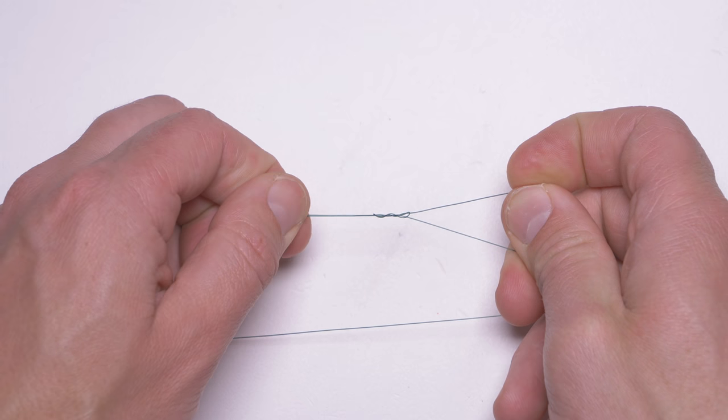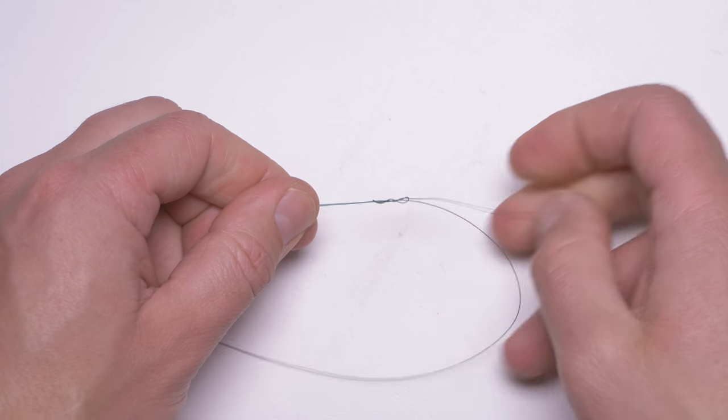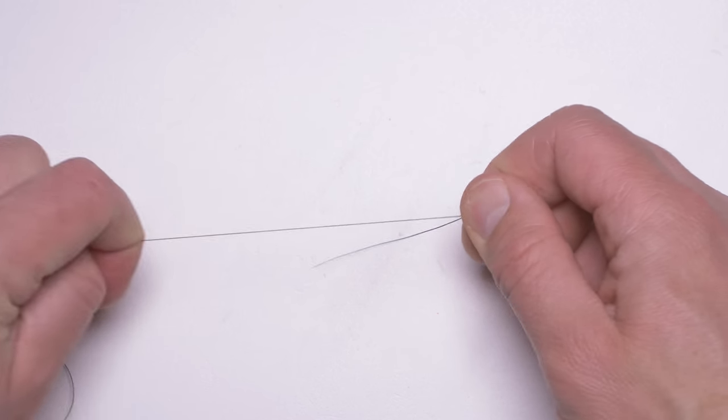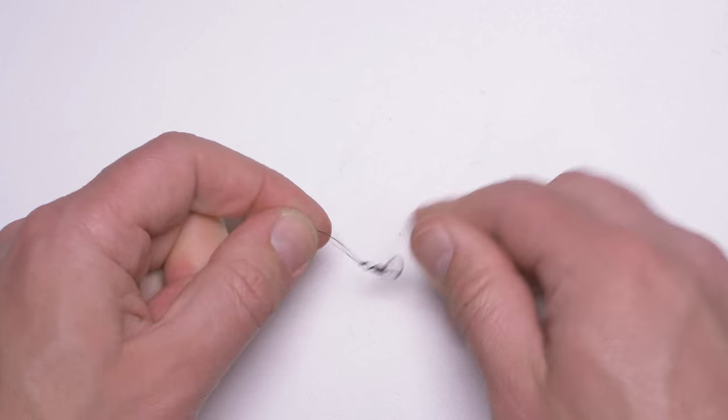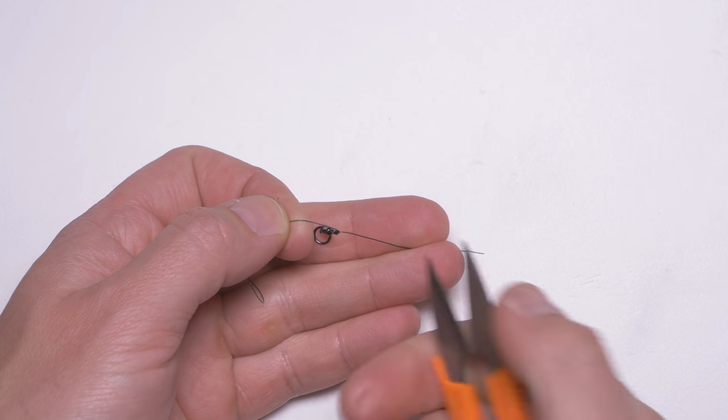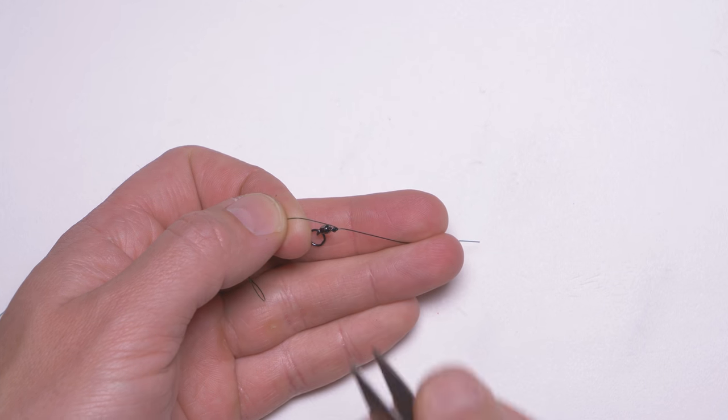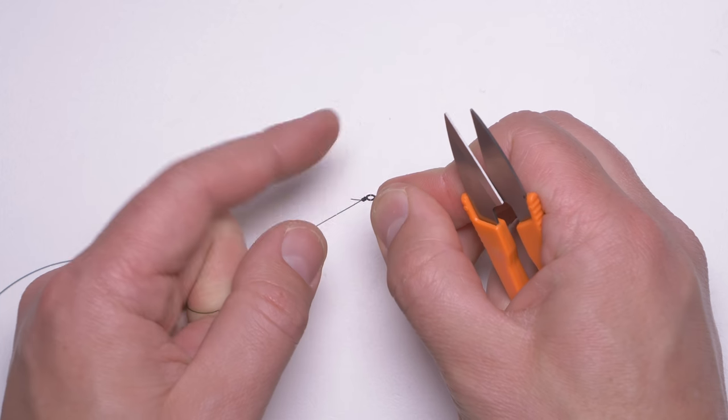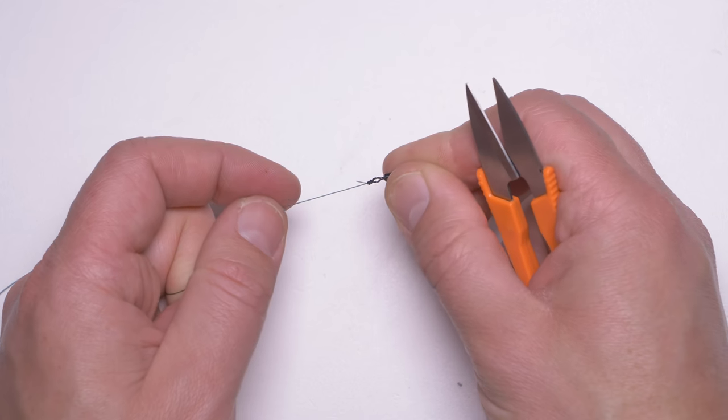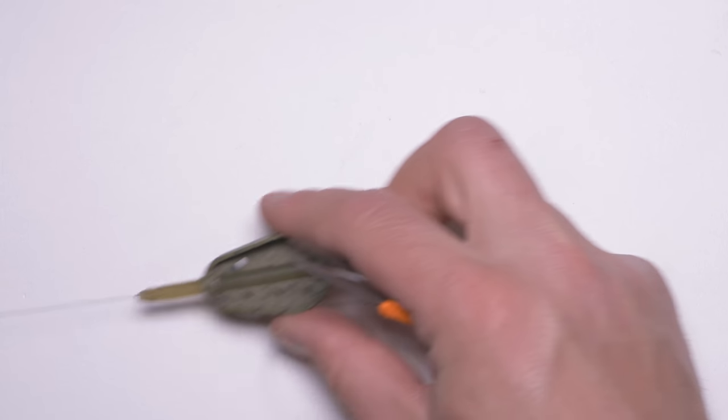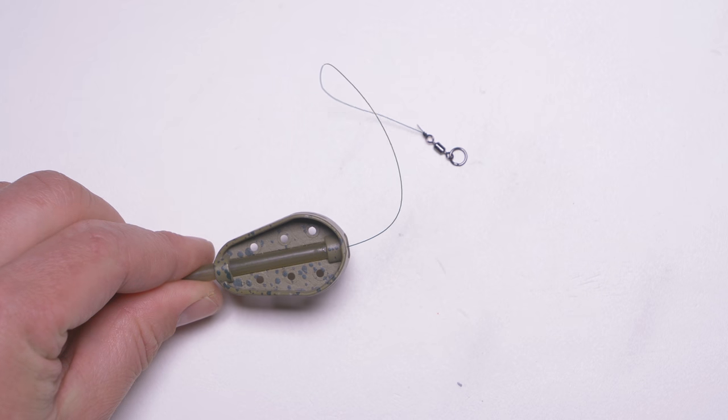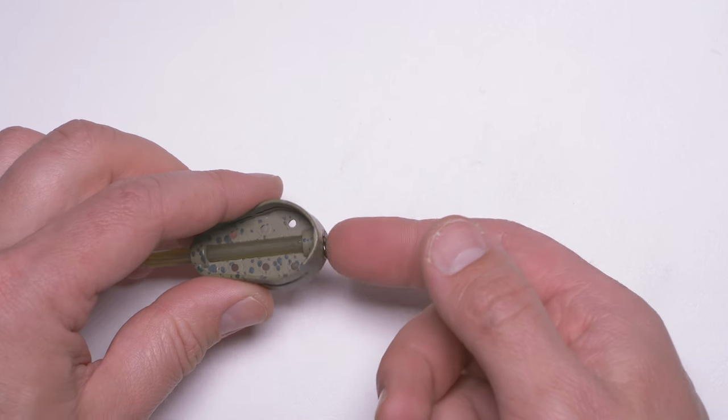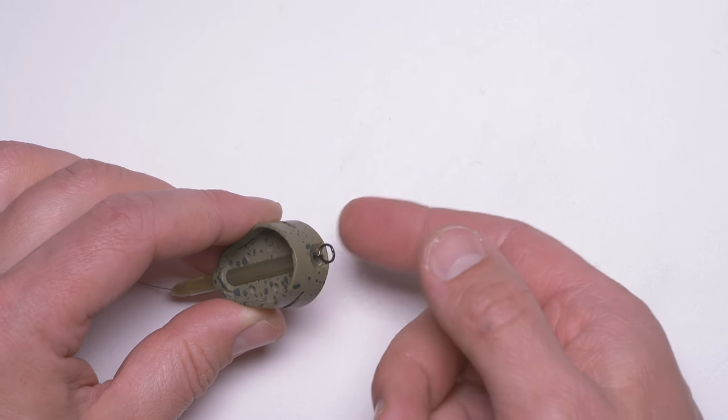As with every single knot, don't forget to wet it just before pulling it tight. I can leave a little bit longer tag end, just probably half a centimeter or so. Then I will grab my method feeder, and I have a very nice setup where I can attach my hook link onto.